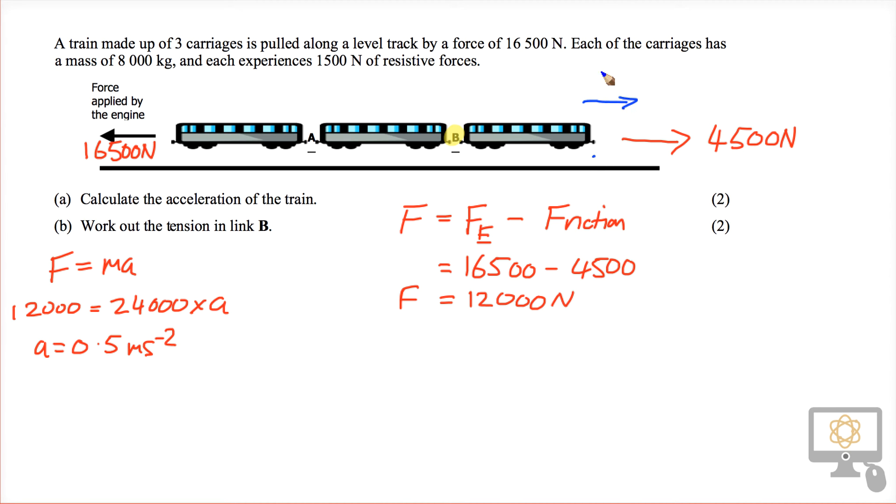There's a frictional force acting in reverse and that's 1,500 newtons. And there is a forward force which is the force produced by the coupling between this last carriage and the one in front of it.